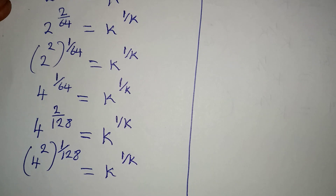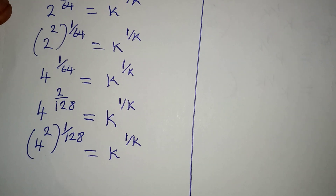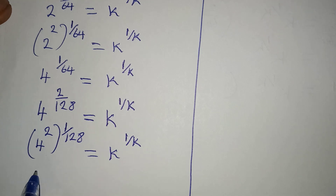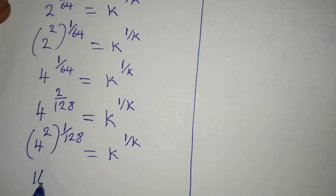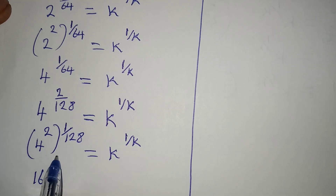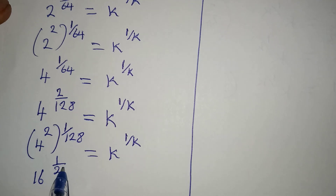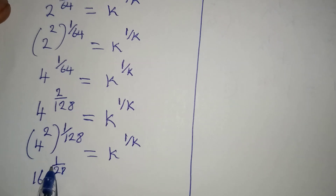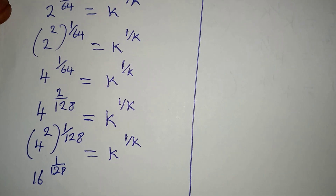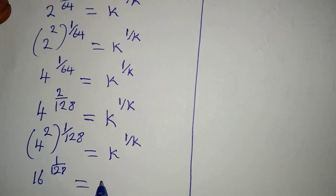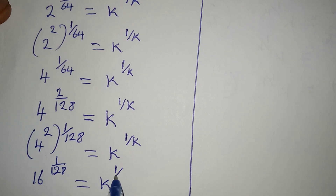Remember, I am not changing anything on the right. Then 4 squared here gives us 16, to the power of 1 over 128. And it is equal to k to the power of 1 over k.